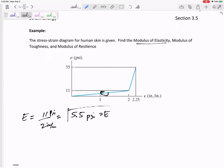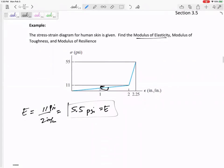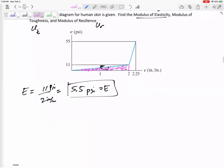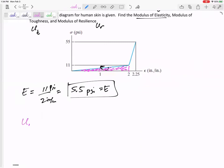Modulus of toughness, that is U subscript t, is the area under the whole curve. Modulus of resilience is just the area under the elastic region. Let me calculate modulus of resilience first in pink.